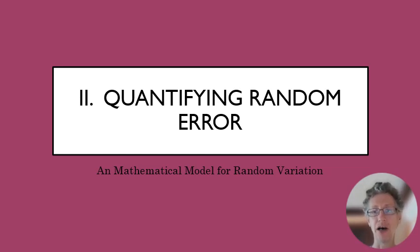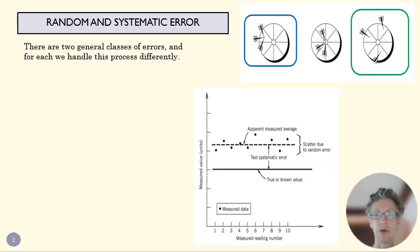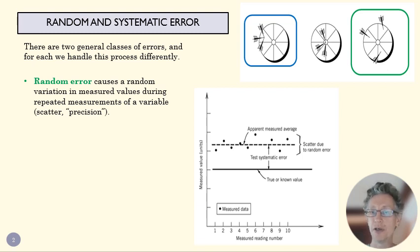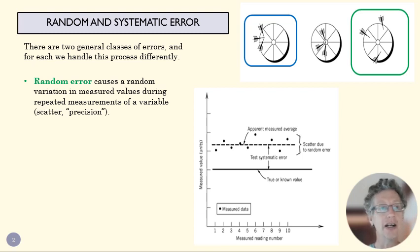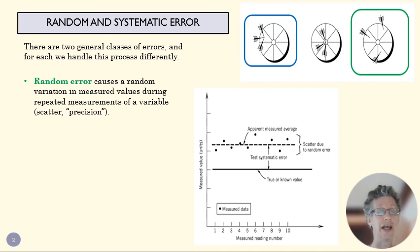How do we think about using math to describe something that's random? We're going to divide error and uncertainty into two different classes. The one we're going to deal with initially is called random error, which has to do with variation within our measurements. Those variations can come from the fact that the thing we're measuring is actually changing, or from measuring something in a slightly different way and getting slightly different answers every time.